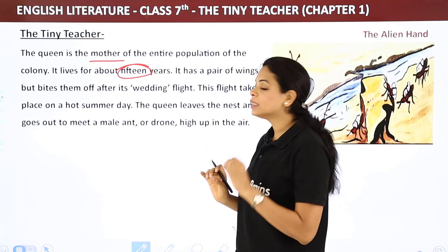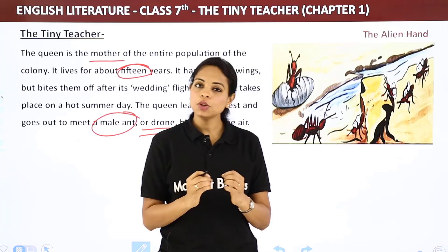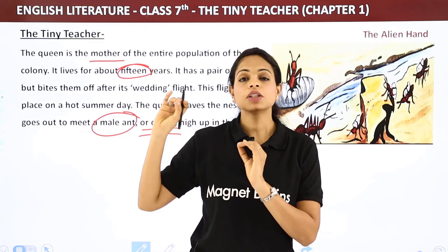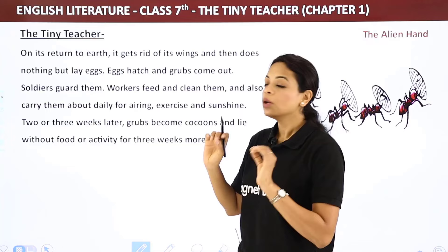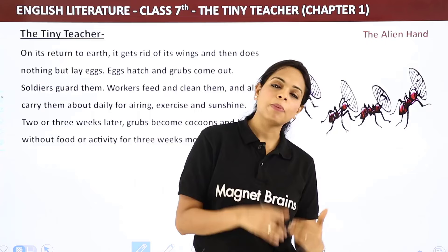On its return to earth, the queen gets rid of its wings — she bites them off. After the wedding flight, she does nothing but lay eggs. That is her only job. Once she is back on the ground after mating, she simply lays eggs for the rest of her life.